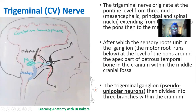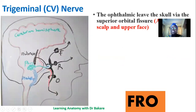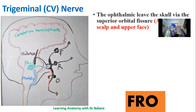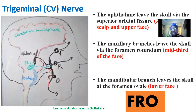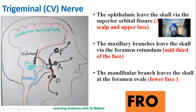After the formation of the ganglion, the trigeminal nerve divides into three divisions: the ophthalmic, the maxillary, and the mandibular branches. These three branches exit the cranial cavity through different foramina to innervate structures around the upper head and face region. The ophthalmic nerve exits through the superior orbital fissure to supply the upper scalp, forehead, and eye region. The maxillary branch exits through the foramen rotundum to supply the mid-face. The mandibular branch exits through the foramen ovale to supply the lower part of the face and lower jaw.